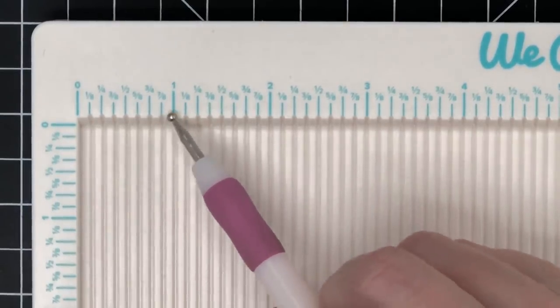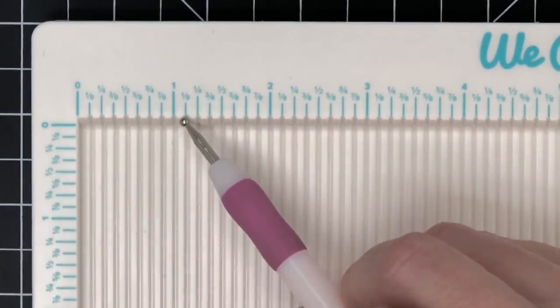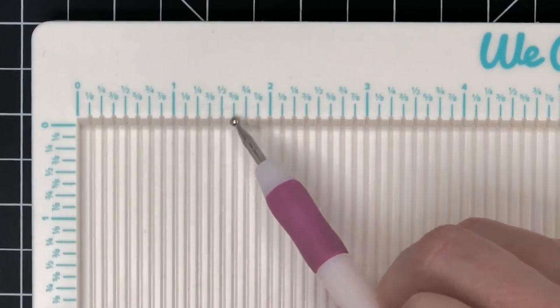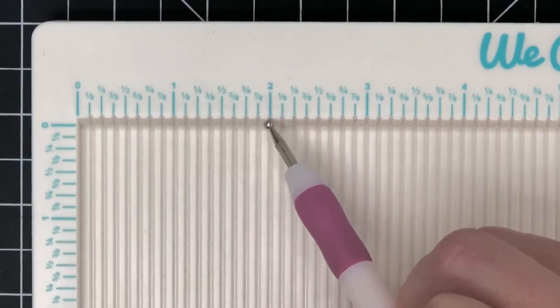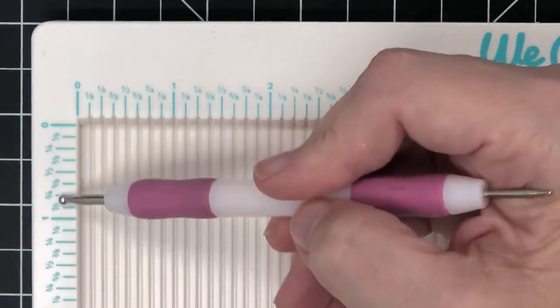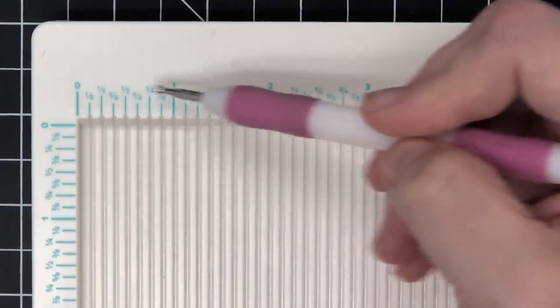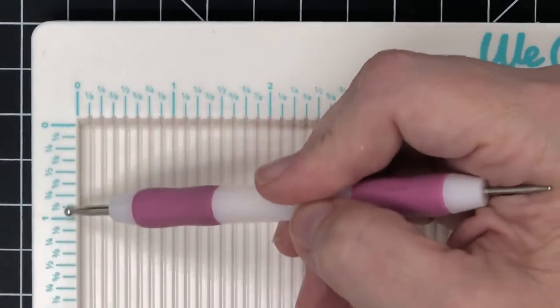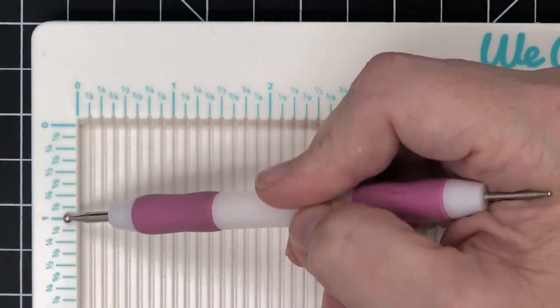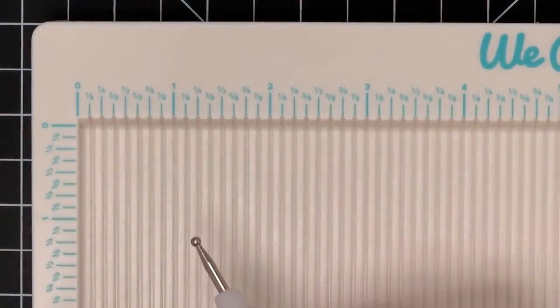And what I love is it doesn't stop at one inch. It keeps going one eighth, one fourth, three eighths, one half, five eighths, three fourths, seven eighths, and so on. It even does it along the side. They don't just do it at the top and then quit here. You still have those eights marked for you. This is so good.